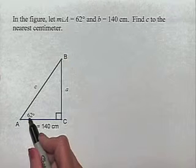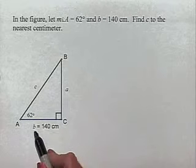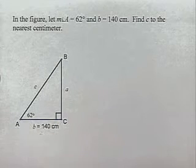In the problem, notice that A is labeled 62 degrees. We have C as the hypotenuse of this right triangle. We're given the length of B, which is the side adjacent.